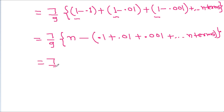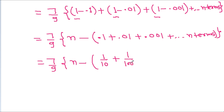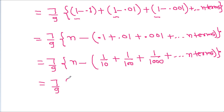And it is 7 by 9 times, where 0.1 is 1 by 10, plus 0.01 is 1 by 100, plus up to n terms. And it is 7 by 9 times (n minus (1 by 10 plus 1 by 100 plus ...)), where 1 by 100 is 1 by 10 squared.